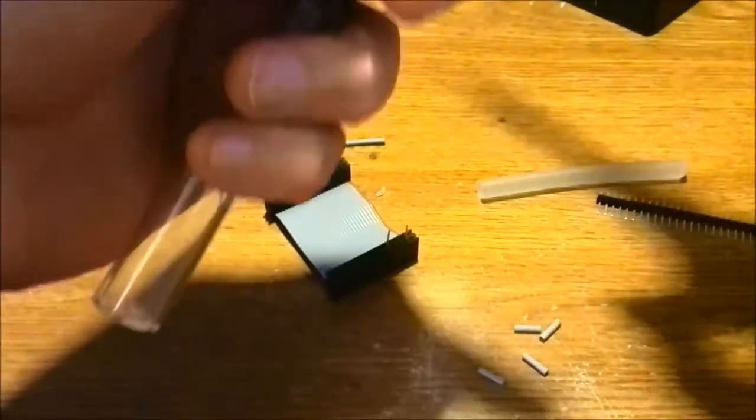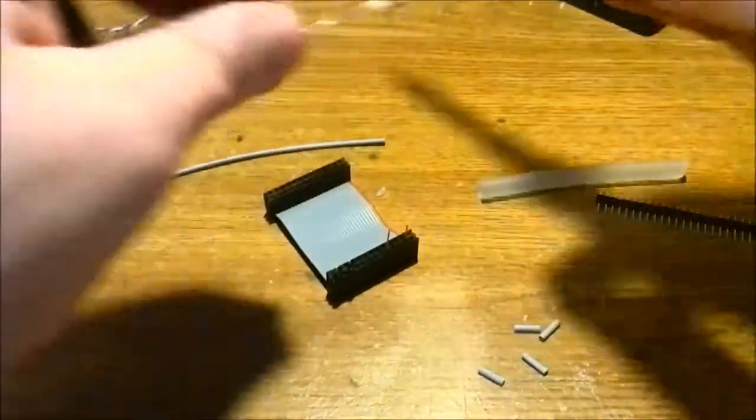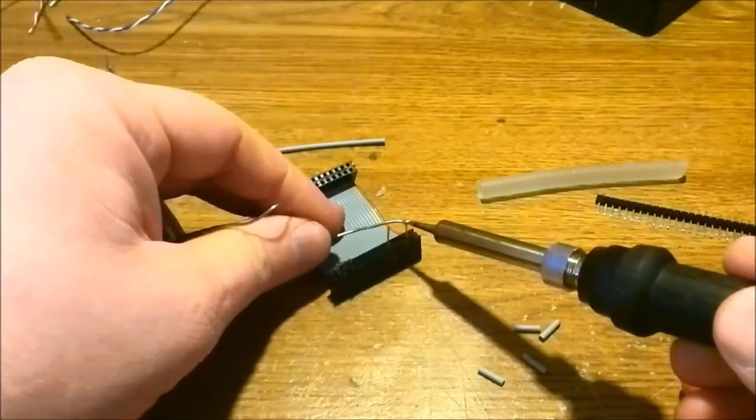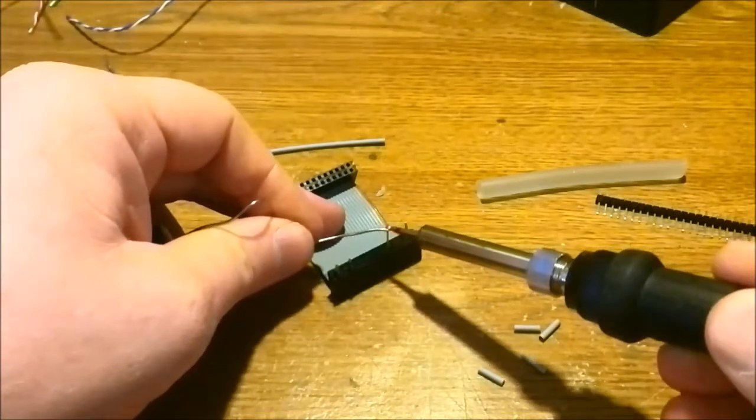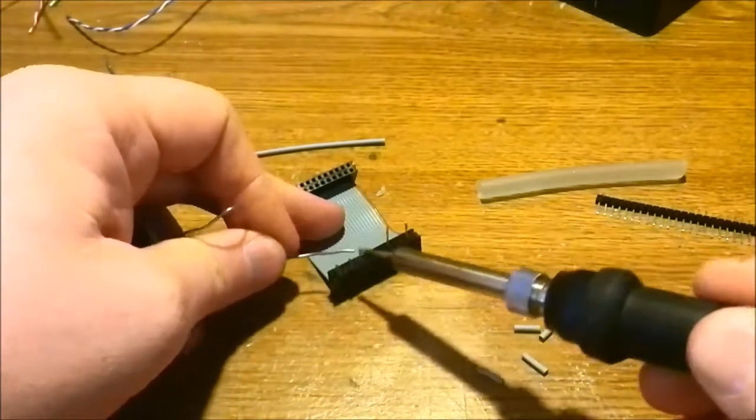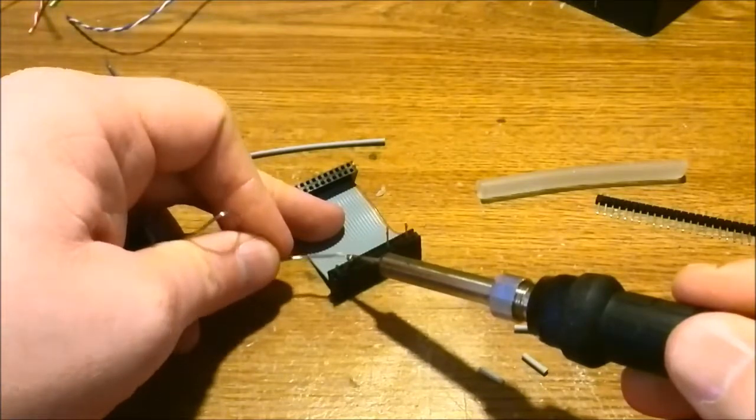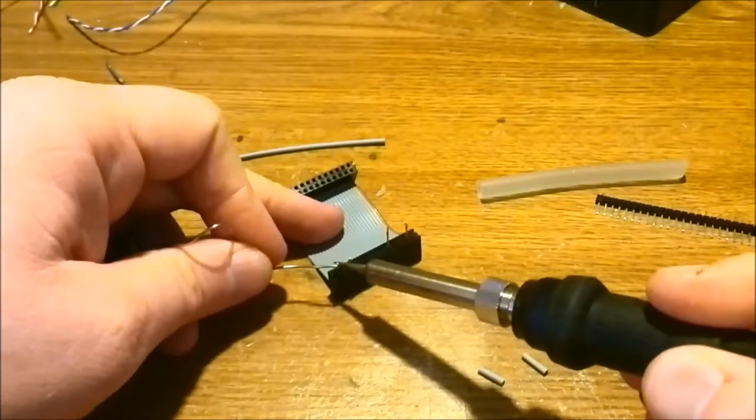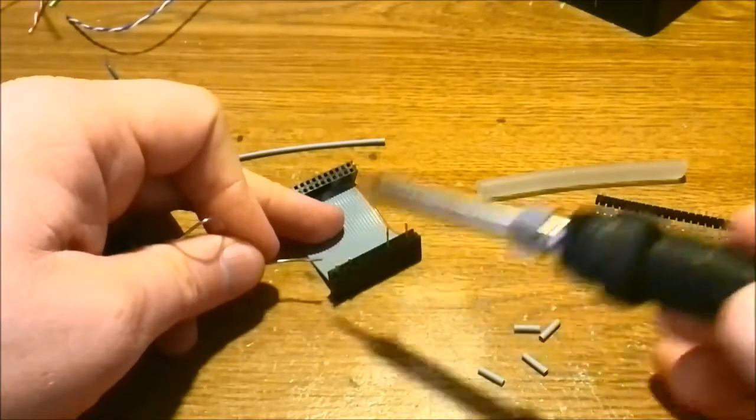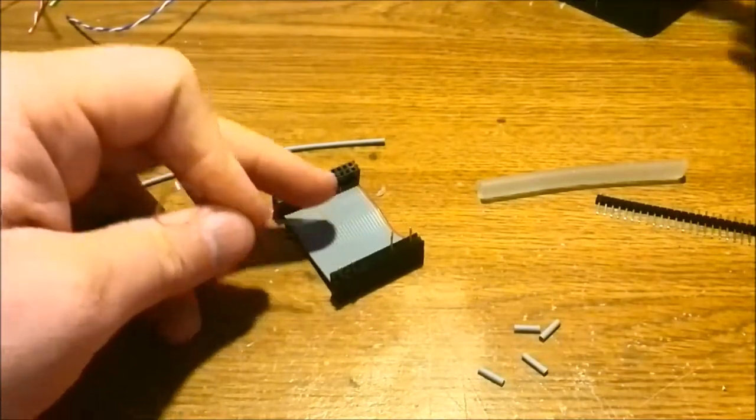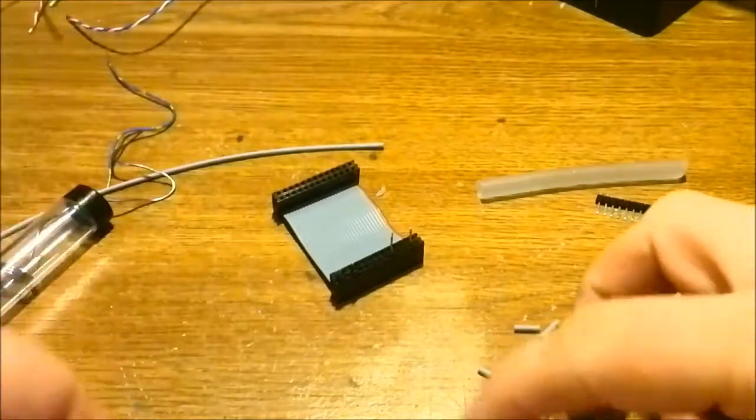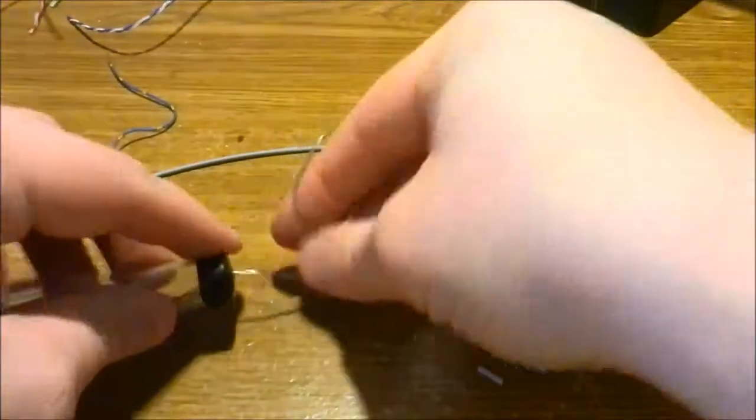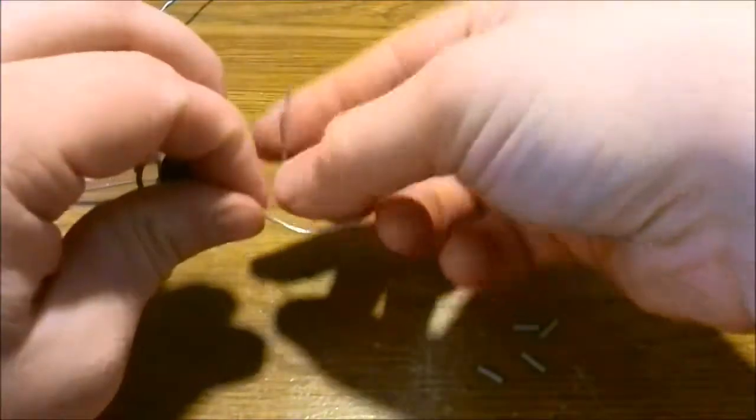The first thing I'm going to do is I'm going to tin these headers and the telephone wires. Make sure not to get too much of an excess of solder on there, because it will make it a little bit more difficult when it comes to the heat shrink. Now also, I'm going to tin the ends of the wires.